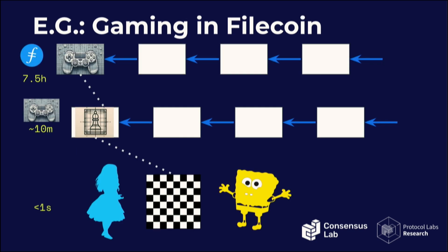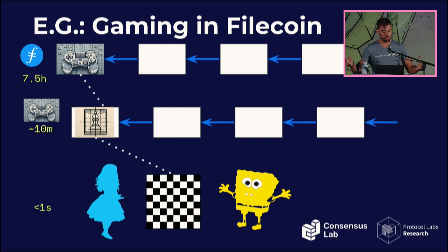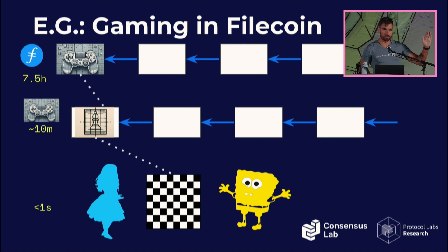What seven and a half hours means in practice: if you're launching a gaming platform with multiple games, you don't want users to wait seven and a half hours every time they buy a game. You could do a subscription-based system where a token is issued and they only wait once. Then you run an L2 for multiple games with your own consensus taking about 10 minutes. If Alice and Bob want to play chess, they can spawn a state channel and play within seconds.